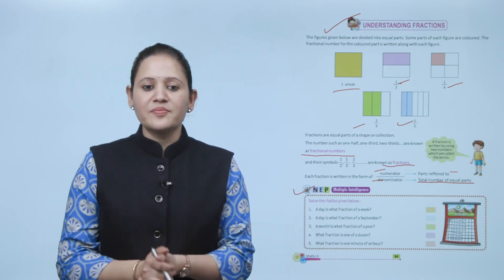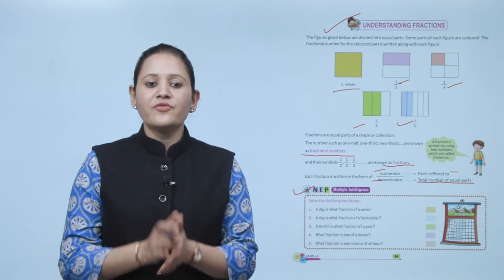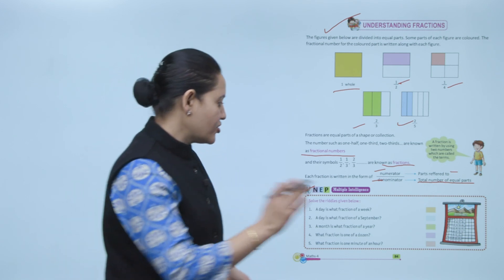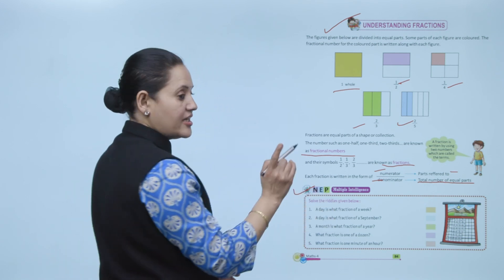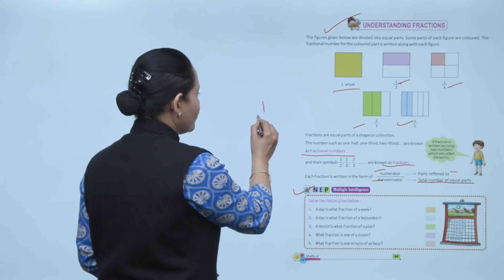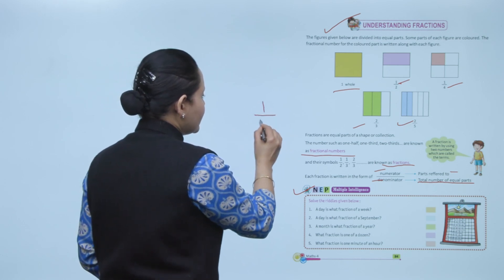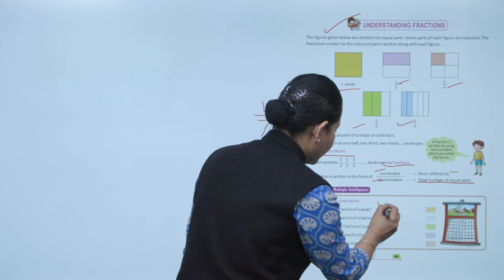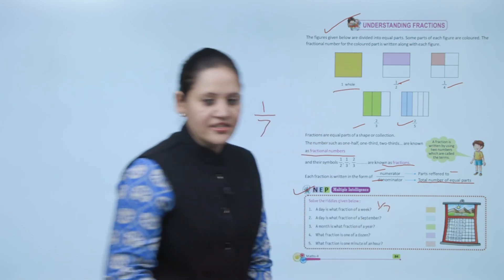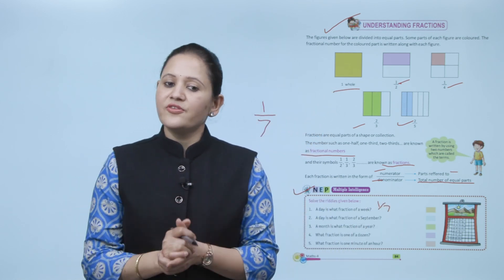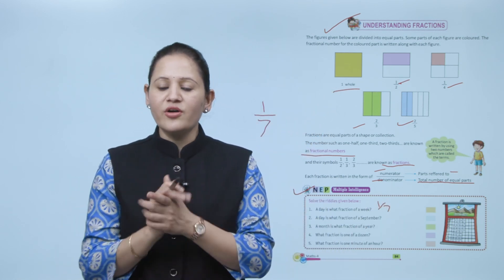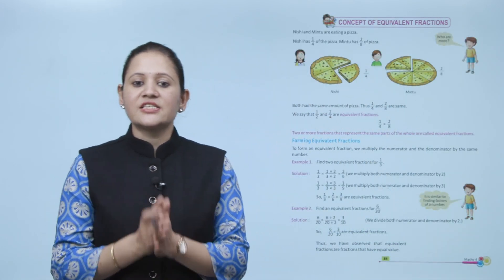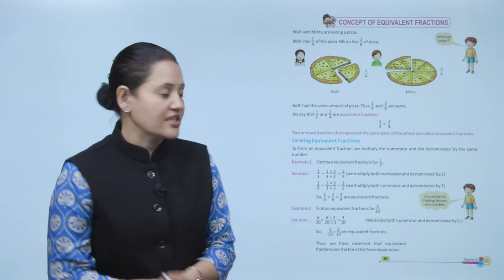Next is multiple intelligence — solve the riddle: a day is what fraction of a week? One day out of a total of seven days, so the answer is 1 by 7. This is how you find the fraction for given questions.